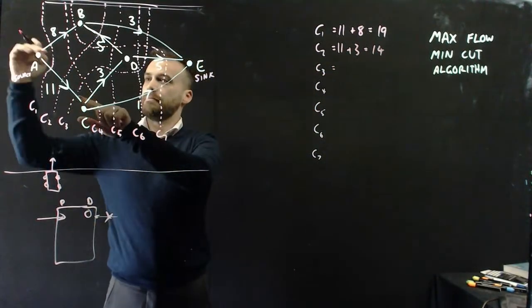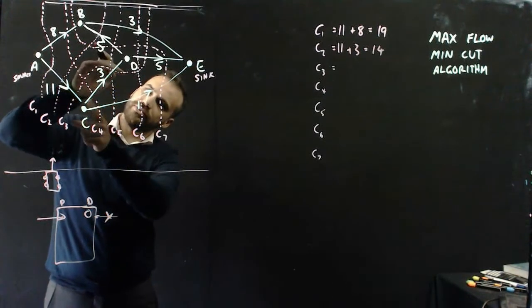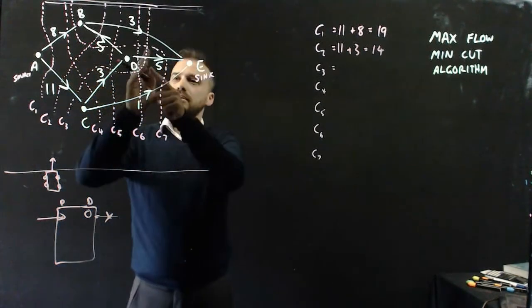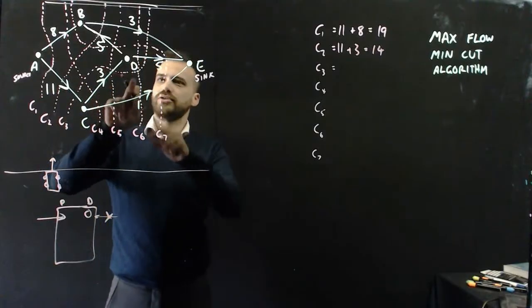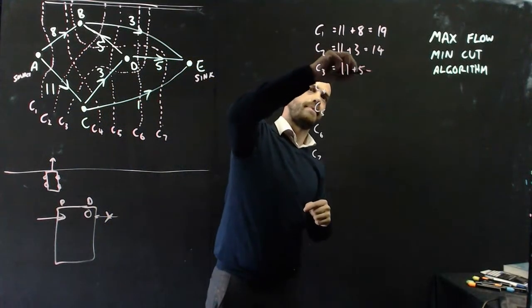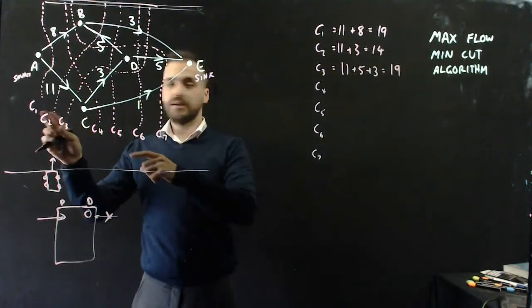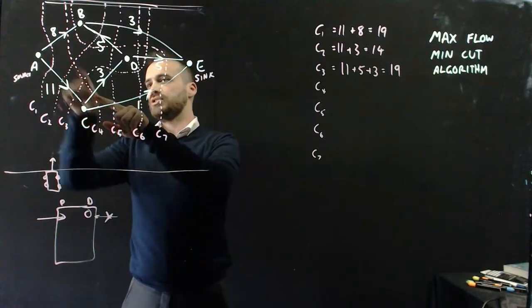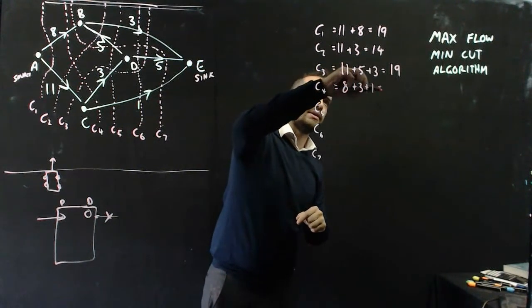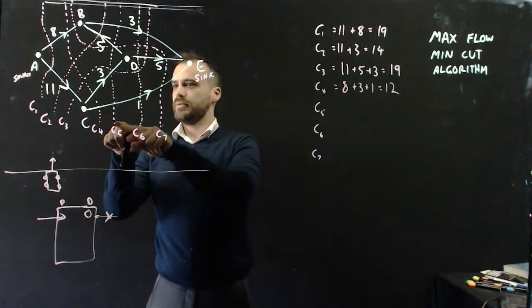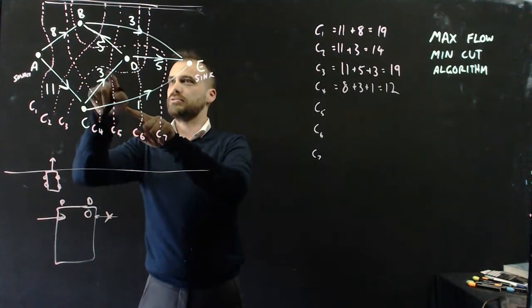C2: water's flowing into the passenger side — that's 11. Then I drive up here and get to this one, but the water's going in the driver's side so I don't count it. Then the next one, water comes in the passenger side — that's 3. So C2 is 11 plus 3, equals 14. C3: passenger side, driver's side — I don't count that one — then passenger side, passenger side, passenger side. So it's 11 plus 5 plus 3 equals 19. C4: passenger side, passenger side, passenger side — 1 plus 3 plus 8 equals 12. C5: passenger side, passenger side, driver's side — don't count it — passenger side. So 1 plus 3 plus 3 equals 7.